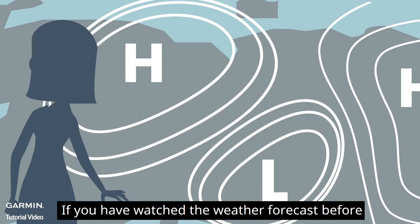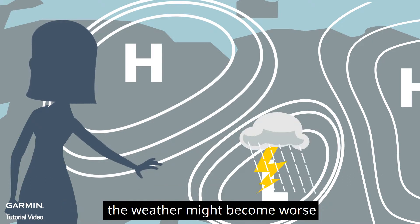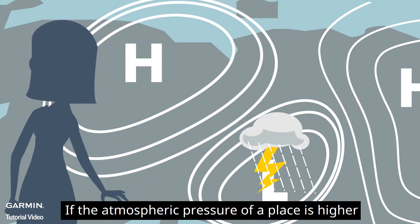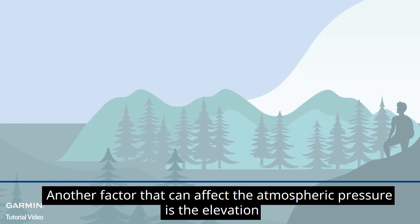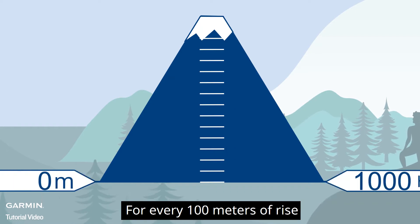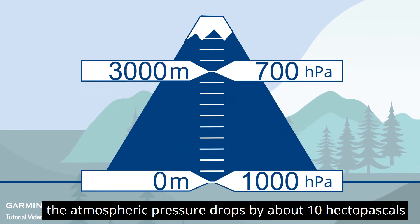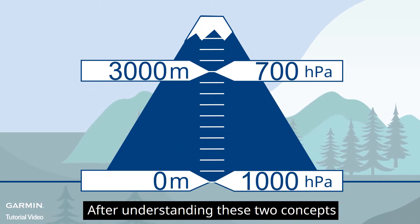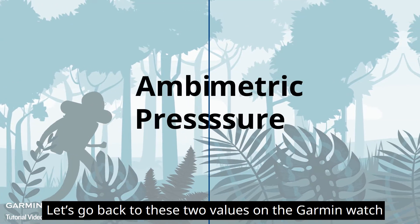If you have watched the weather forecast before, you will know that if the atmospheric pressure of a place is lower, the weather might become worse; if the atmospheric pressure is higher, the weather might be more stable. Besides weather, another factor that can affect atmospheric pressure is elevation — for every 100 meters of rise, the atmospheric pressure drops by about 10 hectopascals.